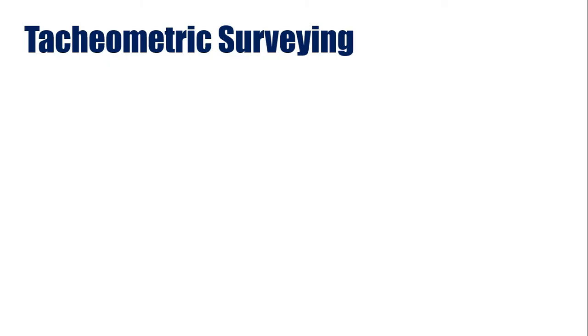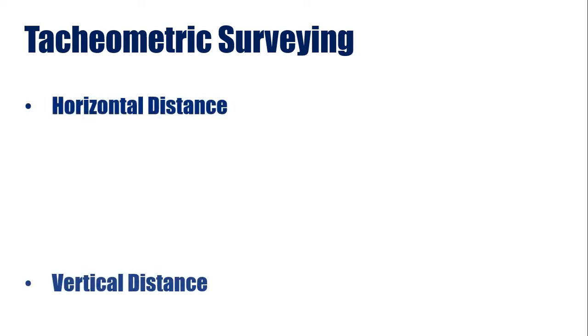So let's start with tachymetric surveying. As we all know, surveying is a field which helps us in locating different points on, below, or above the earth's surface. And to locate those points, we need horizontal and vertical distances. Tachymetric surveying is that branch of surveying which helps us in determining the horizontal and vertical distances.